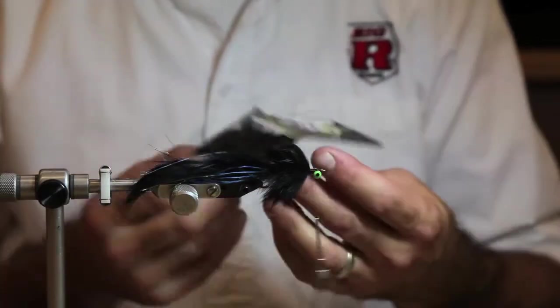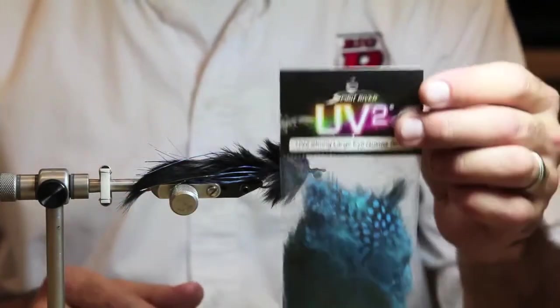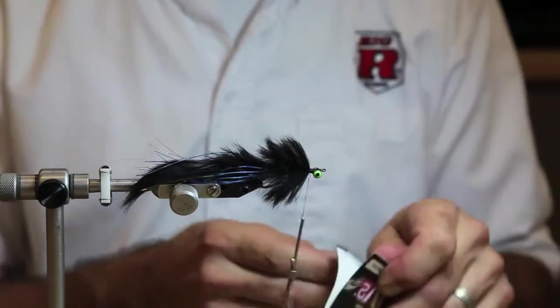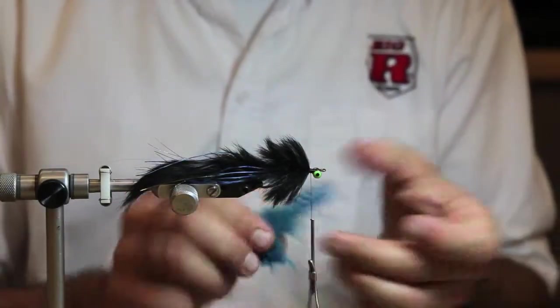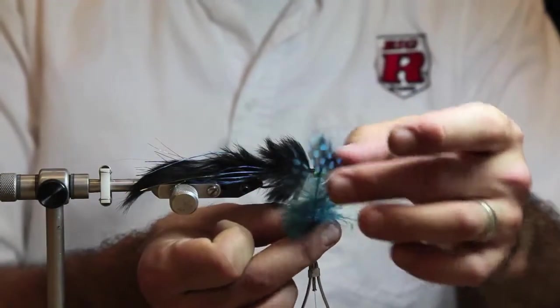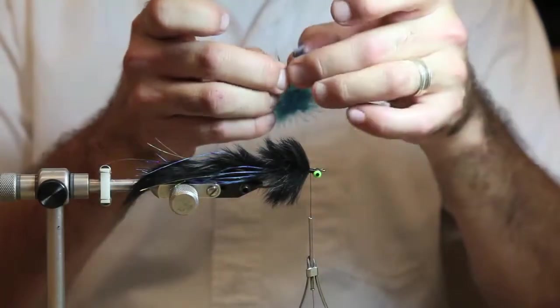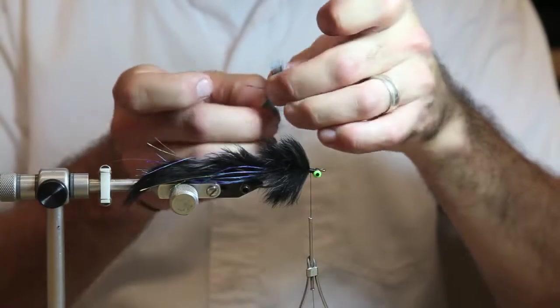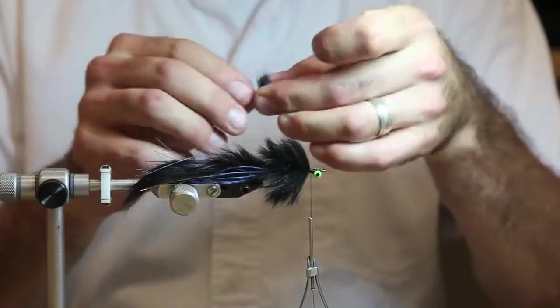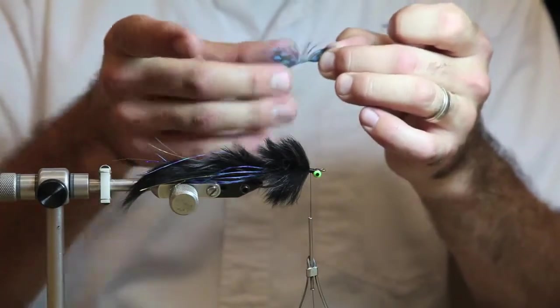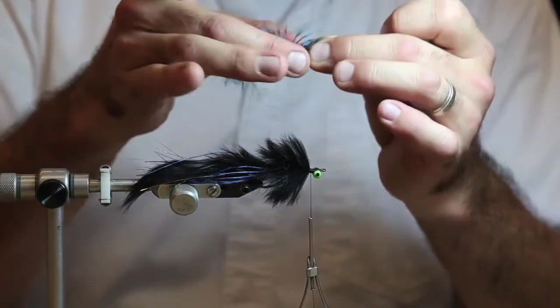Next thing I'm going to put on is this new Spirit River UV-2 Guinea. It's going to go right on the front here. It just kind of breaks up the black a little bit. Find a nice long piece. I'm going to strip one side of this. This should be enough just for one or two wraps.